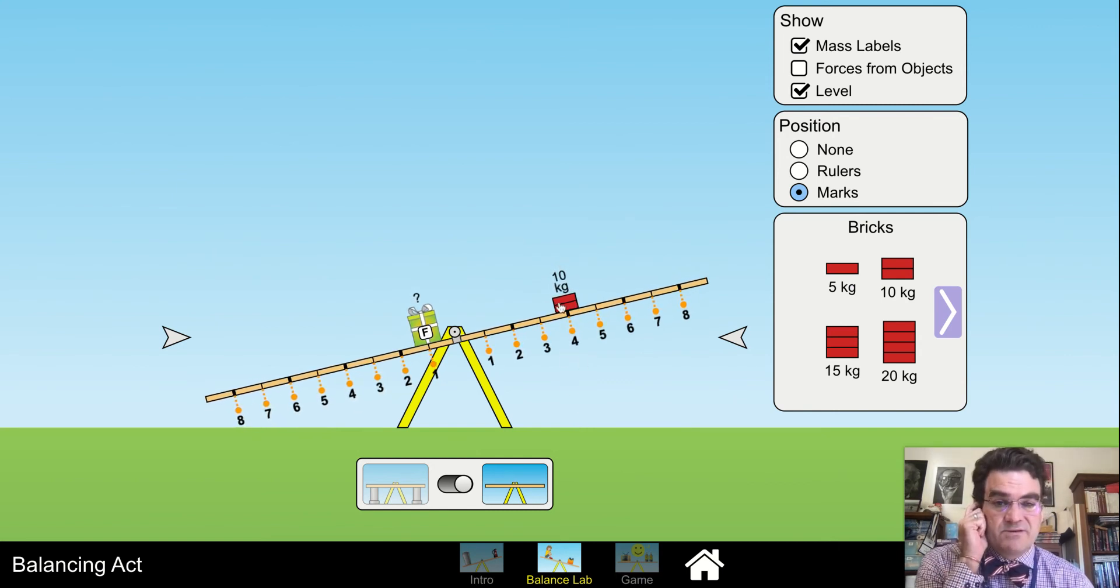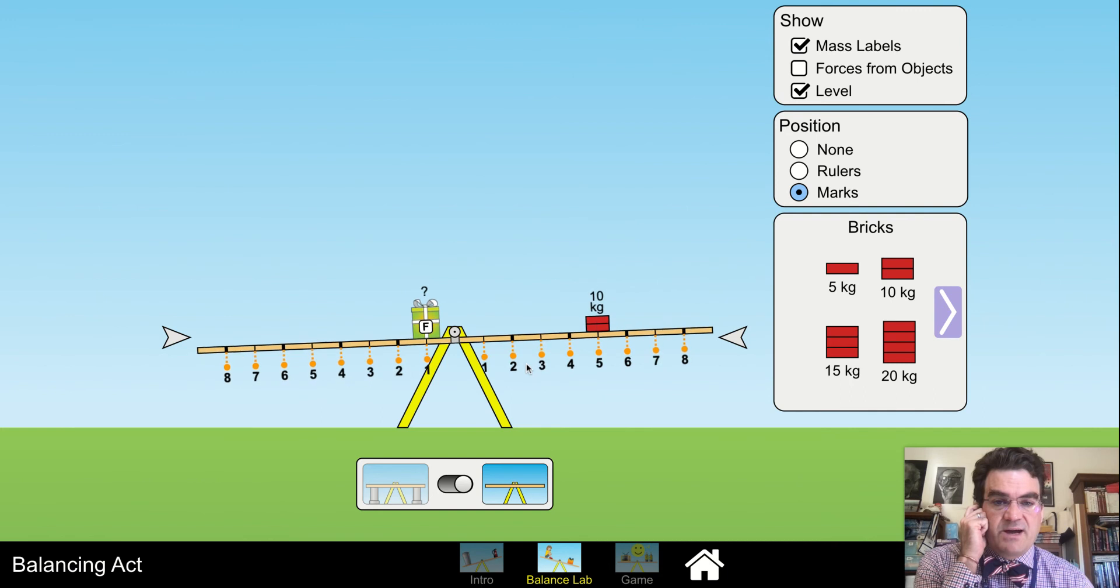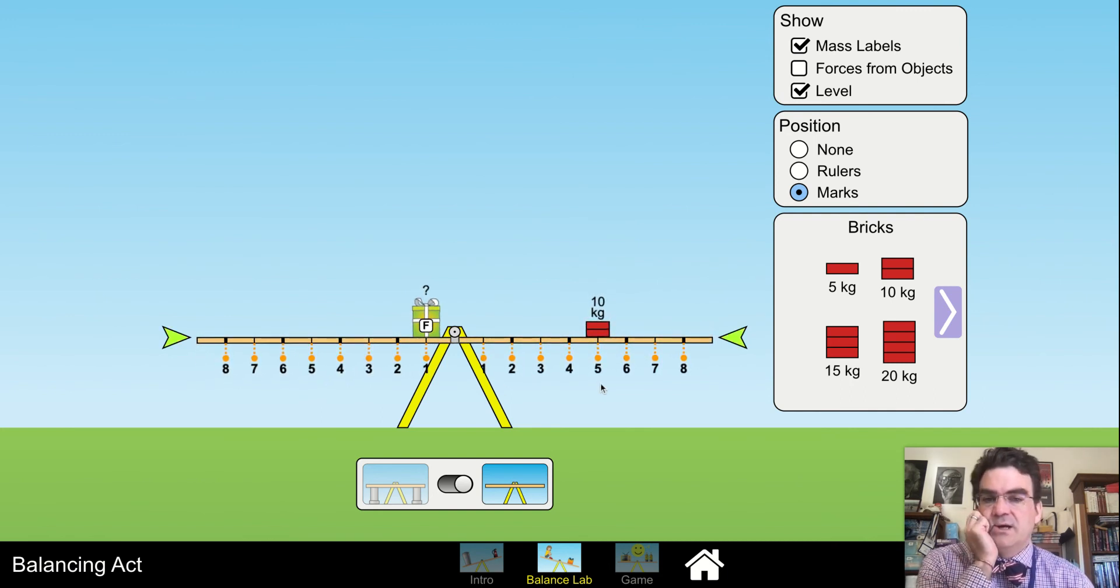10 times 4, that's 40. That's just like what we had. Let's do 10 times 5. There we go. So 5 times 10, we have a torque of 50 on the right. So then we'll have a torque of 50 on the left. So F must be 50 kilograms.